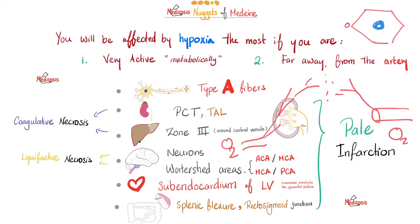As for the heart, recall that the coronary arteries penetrate from the epicardial surface, which is on the outside. Therefore, the region farthest from the epicardium — the endocardium — is most vulnerable. Specifically, it is the subendocardium of the left ventricle, because the left ventricle is the most active part of the heart.